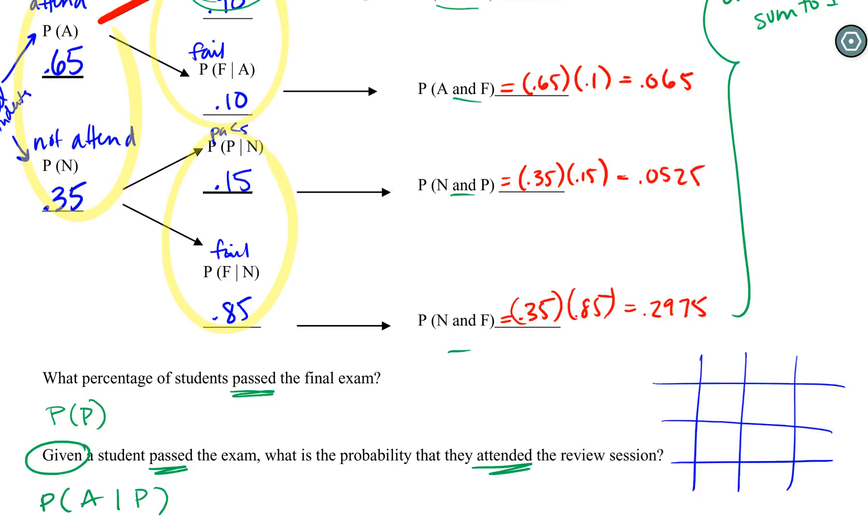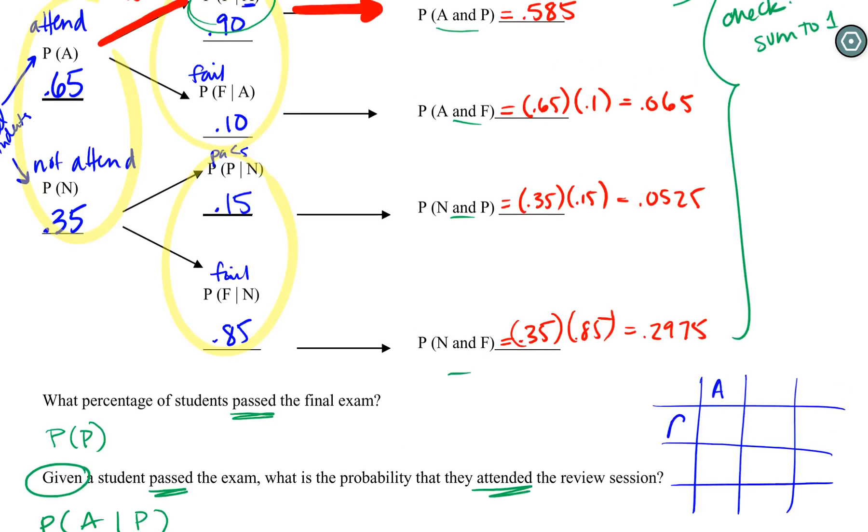So the contingency table is something we can always fall back on. Remember when we make our contingency table we need A and P to overlap, so we're going to put A and P in opposite rows and columns so that way they can overlap. We can put our 0.585 on there, and then we need next to A to be the opposite of A, so not attending, and next to P to be the opposite of P, so failing, and then we can add our total sections.